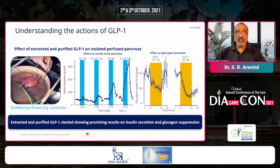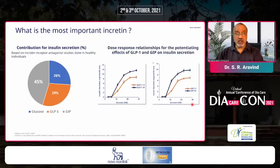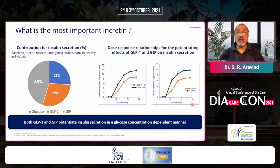When you actually use purified GLP-1, what you see is an increasing level of insulin and, most importantly, the effect on glucagon secretion, which starts to come down — what we call glucagon suppression. Both GLP-1 and GIP actually potentiate insulin secretion in a glucose concentration-dependent manner, meaning it depends on the level of glucose. It's a very interesting finding if you look at it.